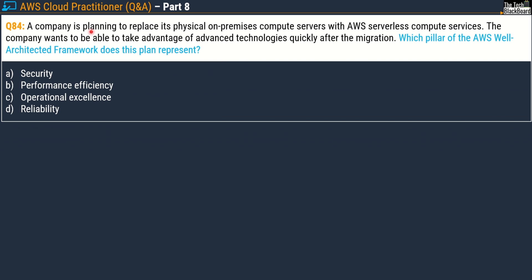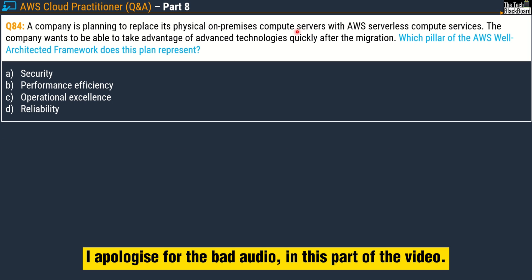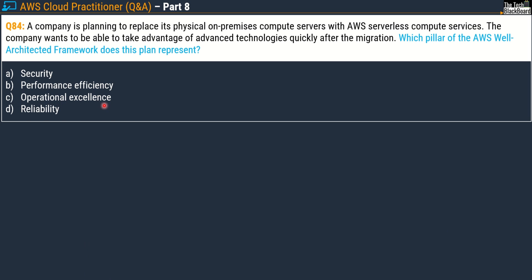Let's move on with Question number 84. A company is planning to replace its physical on-premises compute servers with AWS serverless compute services, and wants to take advantage of advanced technologies quickly after the migration. Which pillar of the AWS Well-Architected Framework does this plan represent? Options: A) security, B) performance efficiency, C) operational excellence, D) reliability. The correct answer is option B — performance efficiency. The AWS Well-Architected Framework is a section from which you will get loads of questions, so be aware of all its pillars.